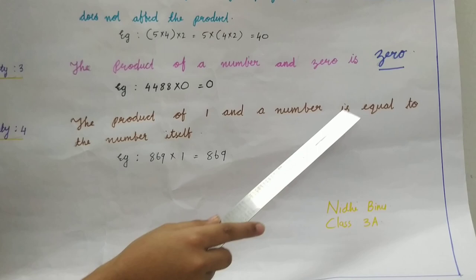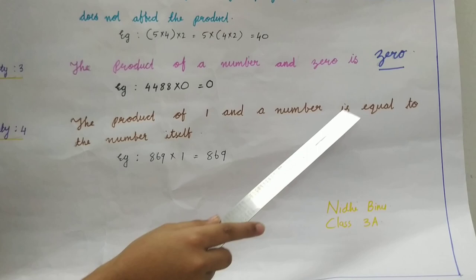The product of one and a number is equal to the number itself. Example: 869 x 1 is equal to 869. Thank you.